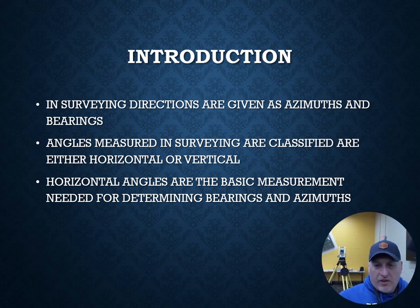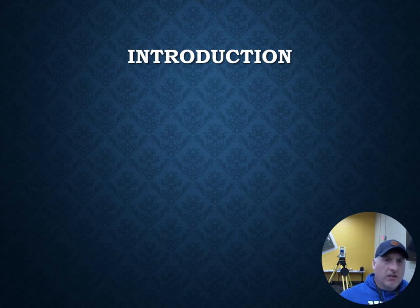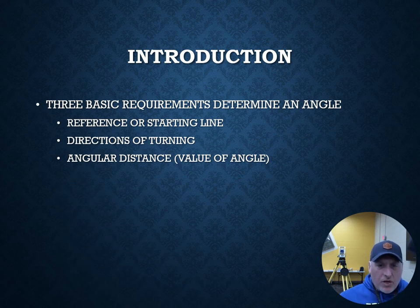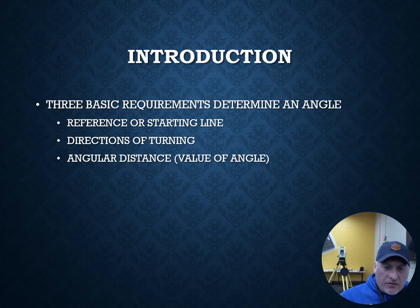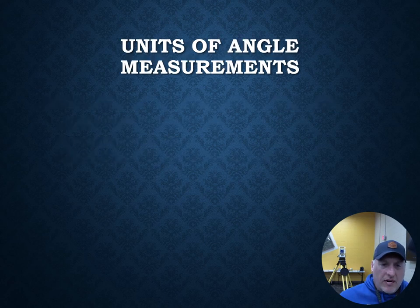Horizontal angles are the basic measurement needed to determine bearings and azimuths. Three basic requirements determine an angle: the reference or starting line, the direction of turning, and the angular distance — the value of the angle, the numbers and letters that go along with a bearing or angle. These are the three important things we need in order to create a direction.